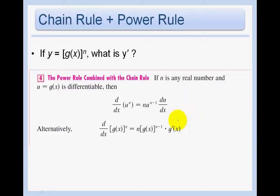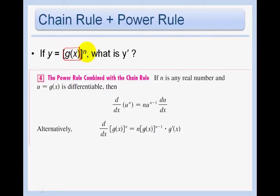Here's looking at the chain rule and the power rule together, which is what we just did. If you have some function g of x to the nth power, its derivative is n times g of x to the n minus 1 — times the derivative of the baby. Here the baby function is g of x and the mother is raising it to the nth power.